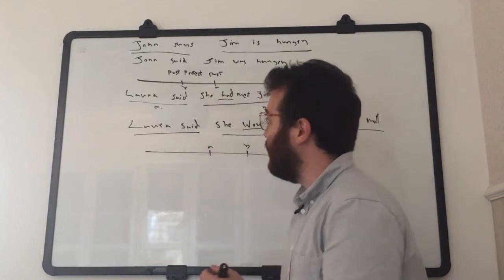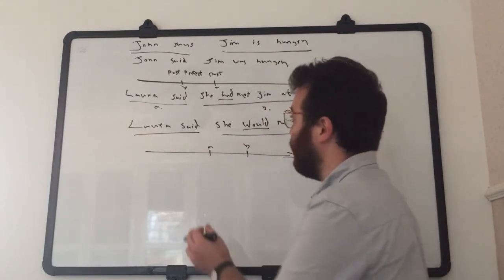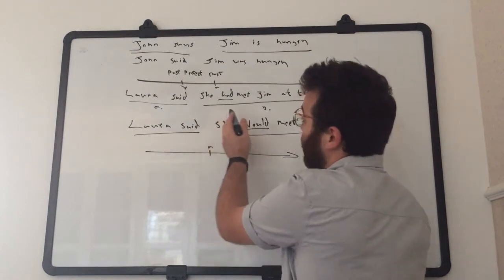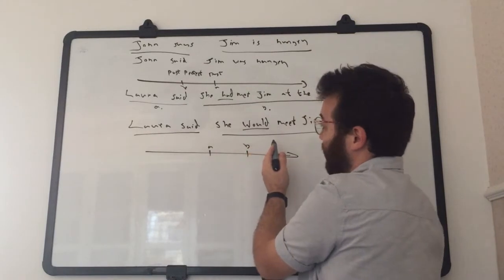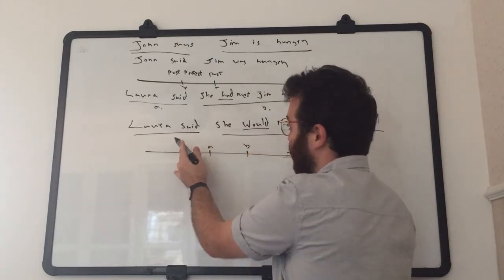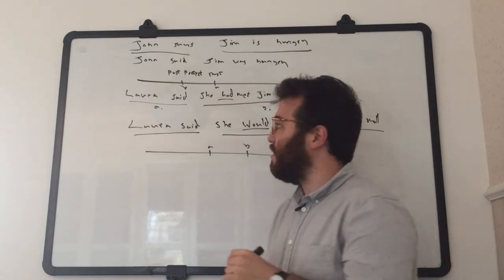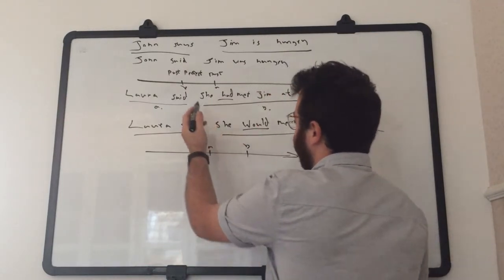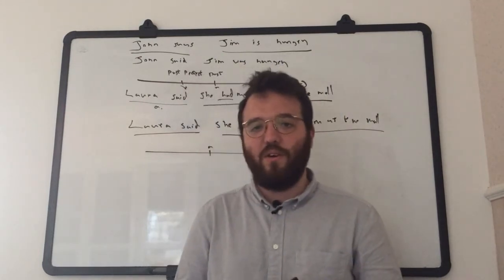But if we have one clause happening after the other, it could be the dependent clause happening before the main clause, or either the dependent clause happening after the main clause. We're going to use some different tenses, namely the past perfect and the conditional. I hope you've enjoyed this video, and good luck.